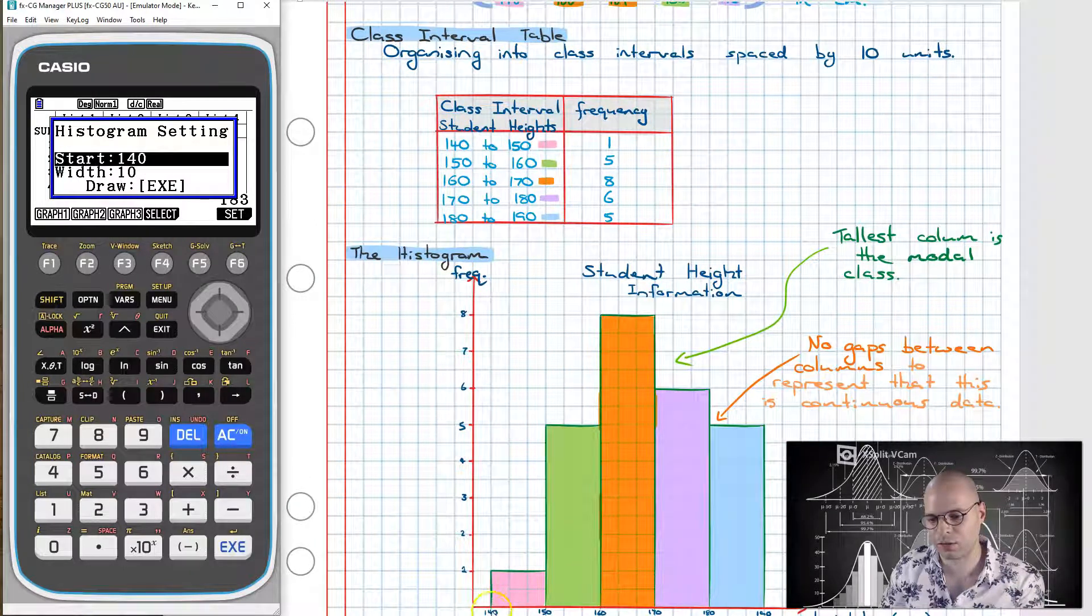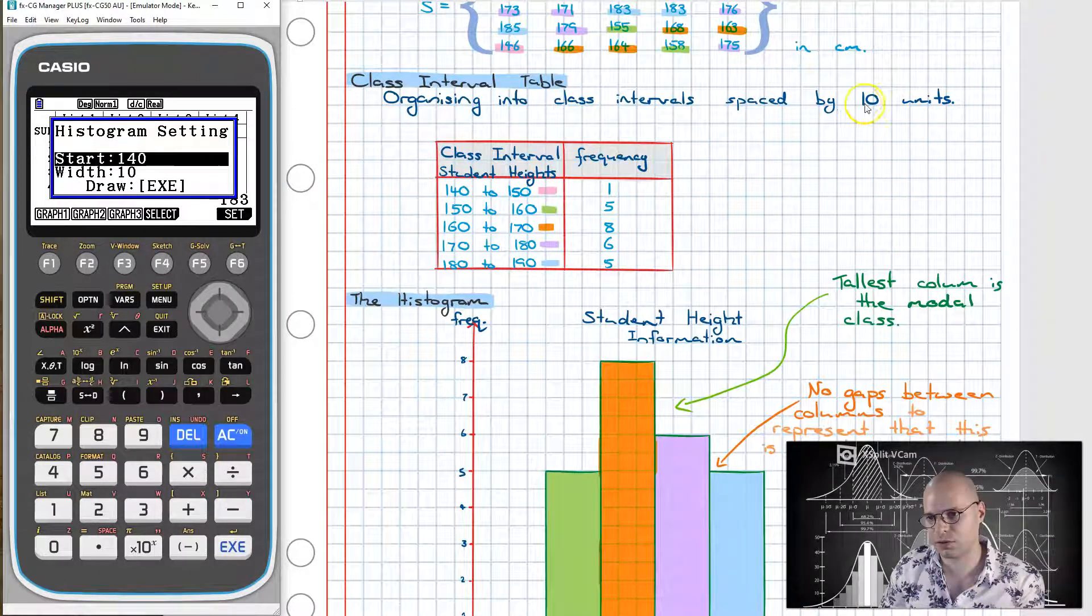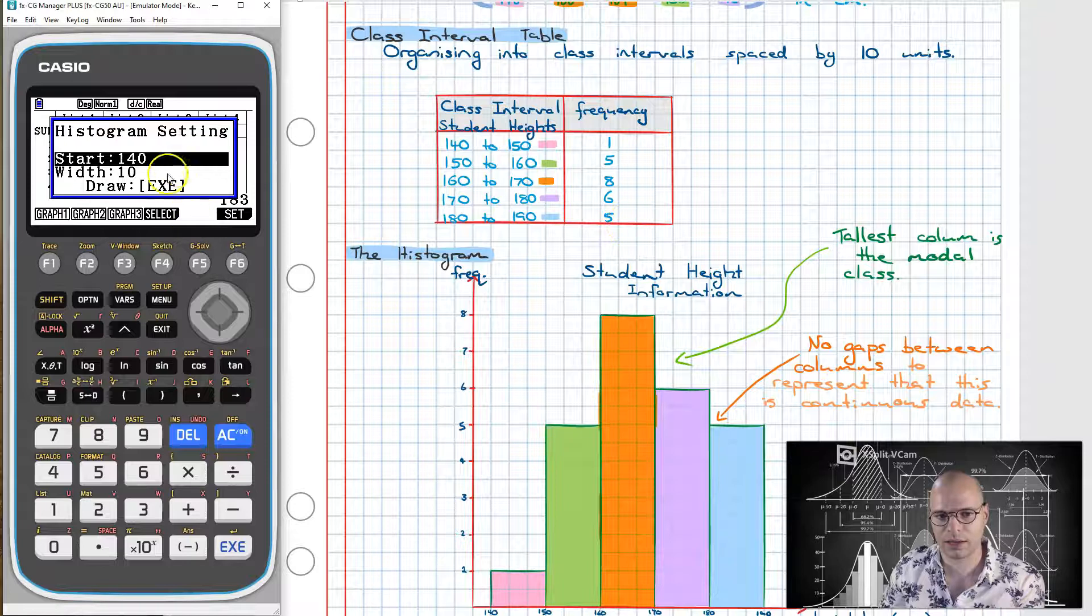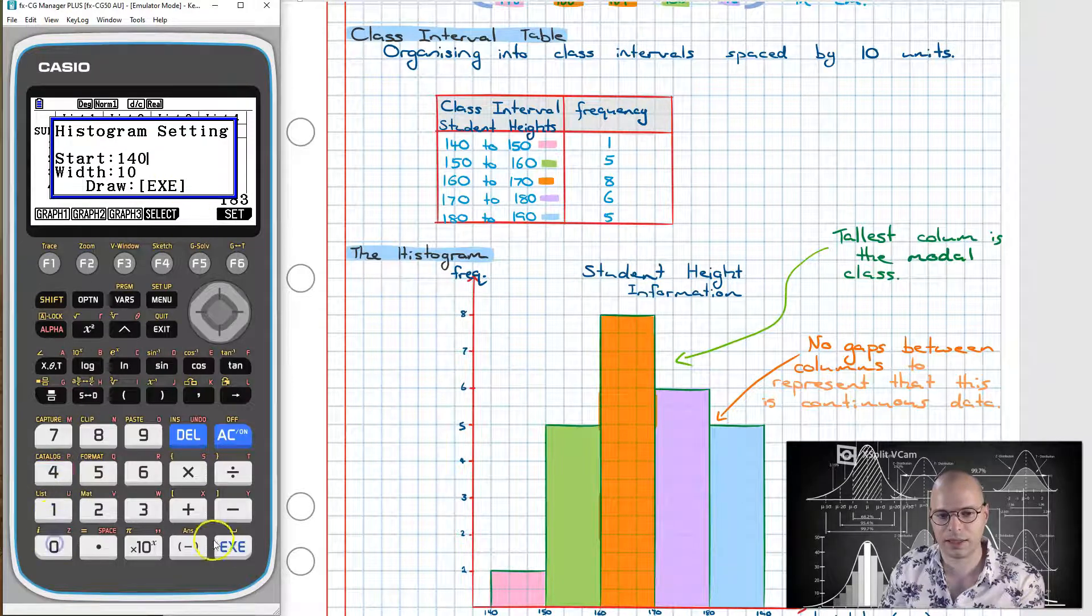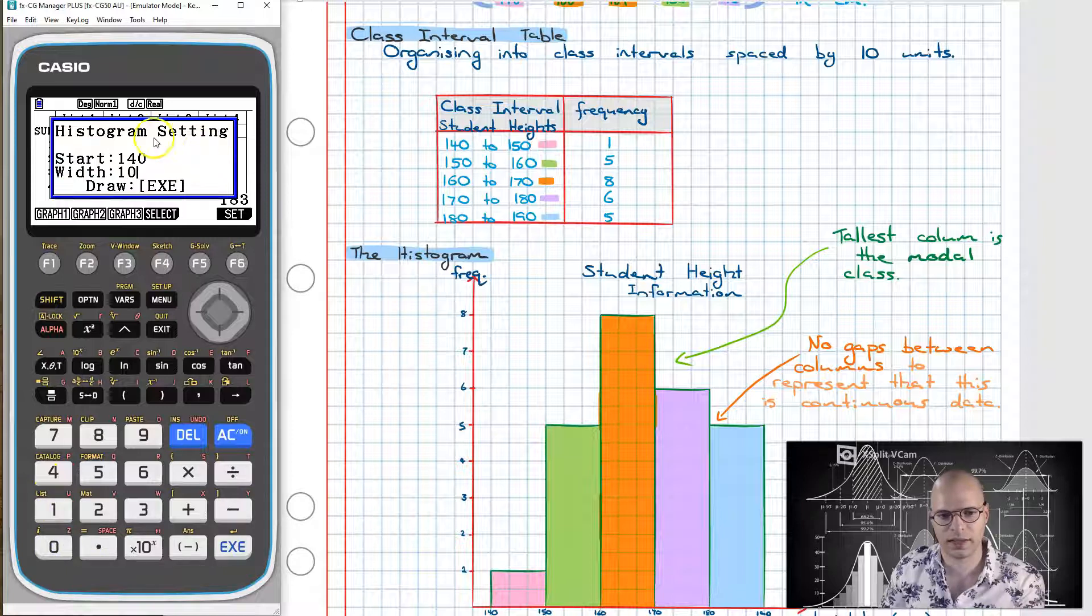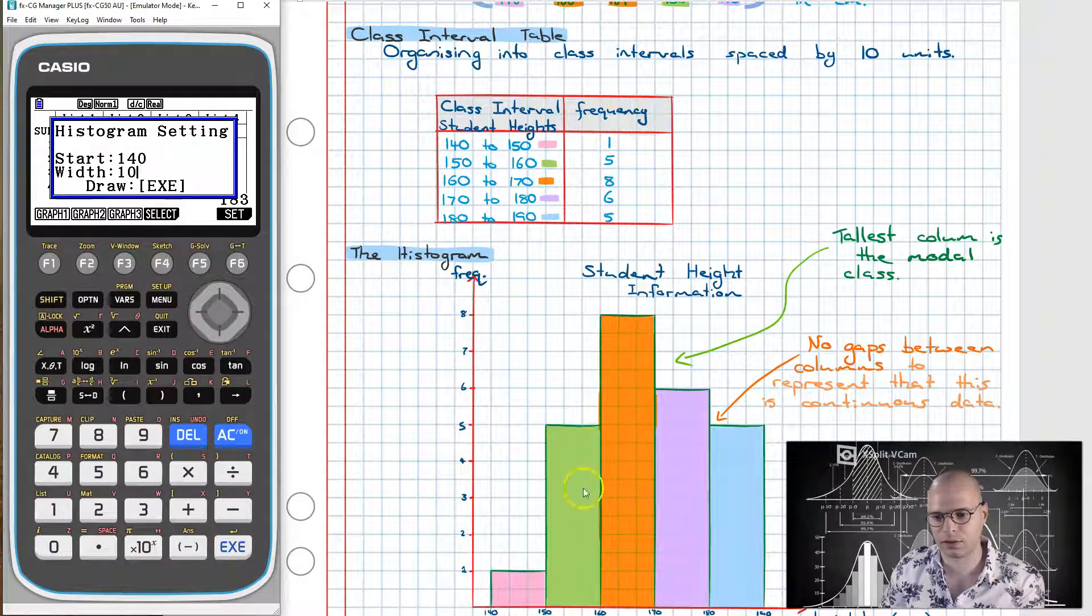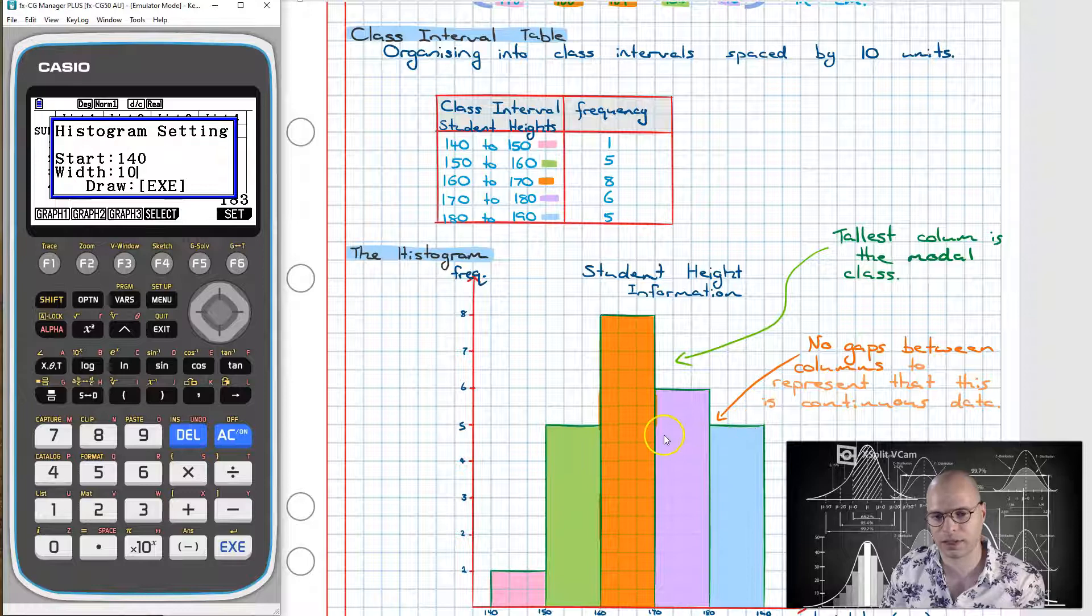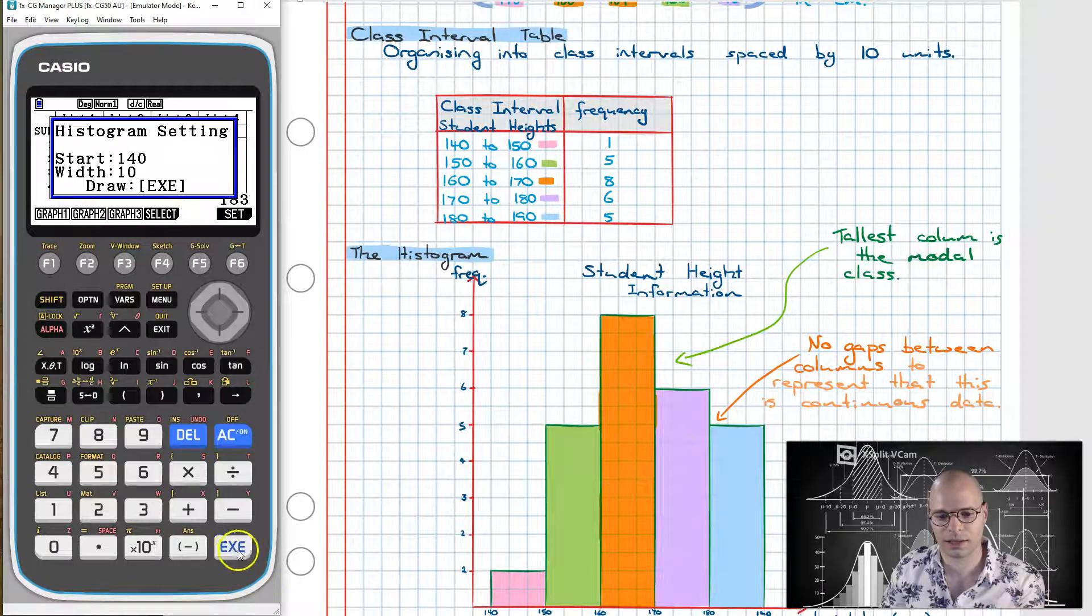So my graph it starts at 140 and it goes up to 190. The class interval is 10 units. So what that means is I type in 140 here and then 10 over here. You can do other ones but it's going to look different to this. For this we're just replicating this graph. I then click execute.